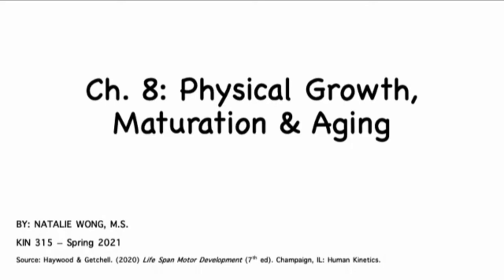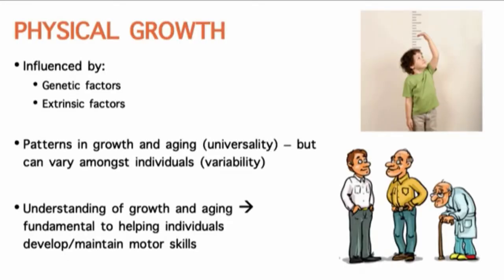We're going to go over each of these in more depth than we did during the first week. Let's go over physical growth first. For each of these we're going to go through lifespan changes. Growth is influenced by genetic and extrinsic factors. When we think of growth, we think of an increase — or also a decrease — in physical qualities. Growth is mostly associated with height and weight, which is what we'll be focusing on for the most part in this section. The genetic factors — if you have tall parents, usually you end up with a tall kid, unless they get a recessive gene.